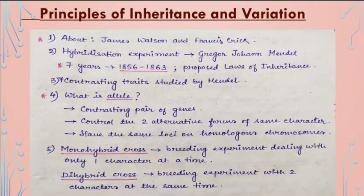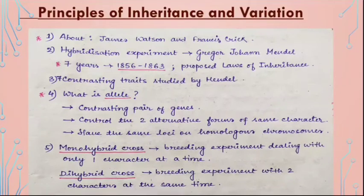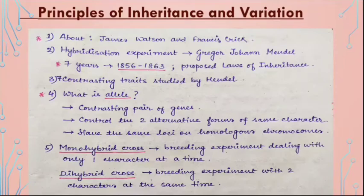For Principles of Inheritance and Variation, you need to know about James Watson and Francis Crick — there is a detailed explanation on the first page of the NCERT. Next, the hybridization experiment performed by Gregor Johann Mendel took seven years, from 1856 to 1863 — these years are important for NEET. He proposed the laws of inheritance, and in his experiment seven contrasting traits were studied. An allele is a contrasting pair of genes that controls two alternative forms of the same character and occupies the same loci on homologous chromosomes.